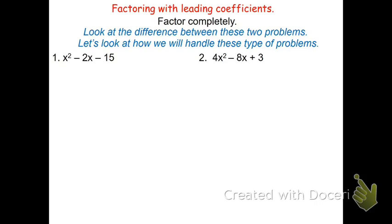Let's begin with the easier one. If I have x squared minus 2x minus 15, one way to do this may be to use the diamond problem. We look for factors that multiply to be our constant of negative 15 and add to be that middle term — that x value — of negative 2.